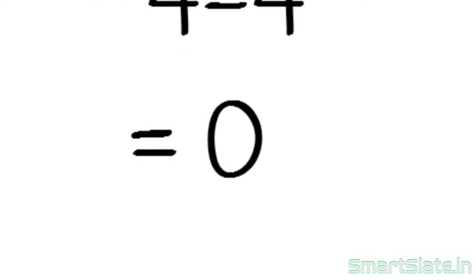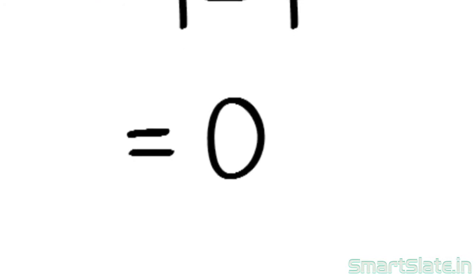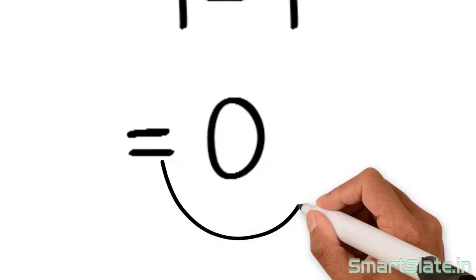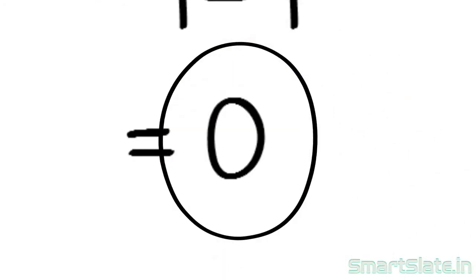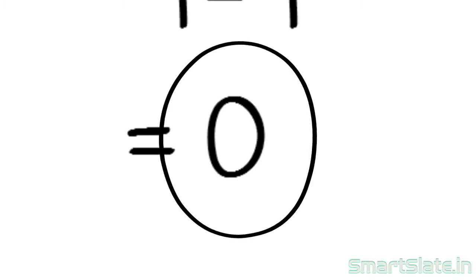Since the polynomial value is 0, minus 2 is indeed a zero of the given polynomial.